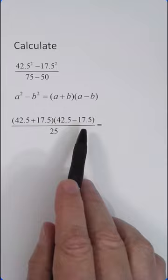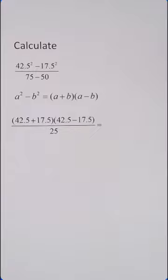This addition and this subtraction are very easy to do by hand. This sum gives you 60 and this difference gives you 25. And 60 times 25 over 25 is 60.